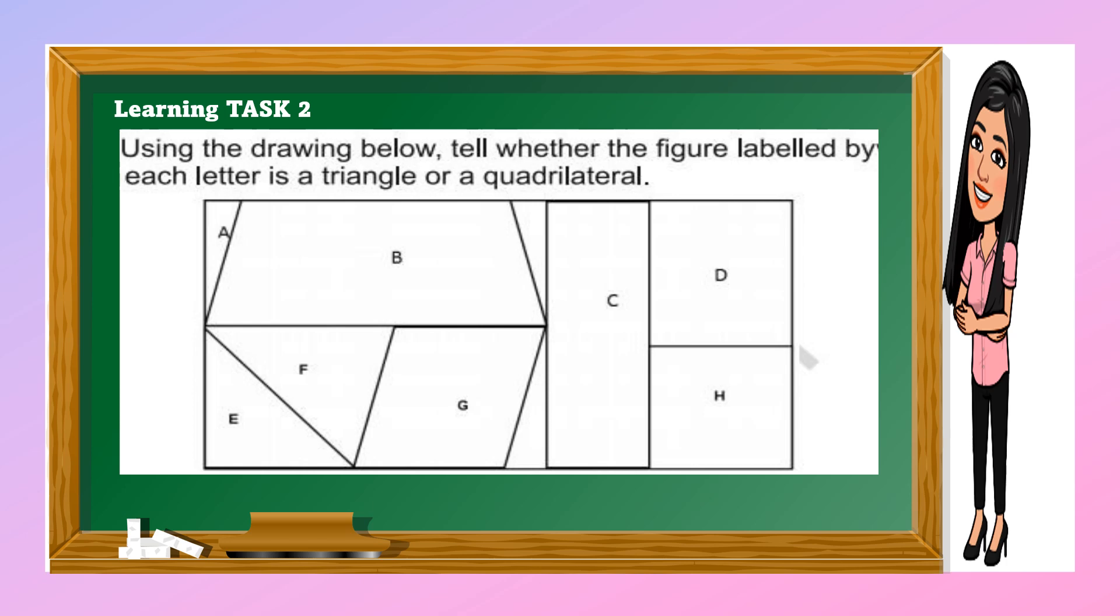For example, letter A: what is this, a triangle or quadrilateral? Yes, this is a triangle, so you're going to write triangle.